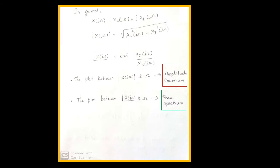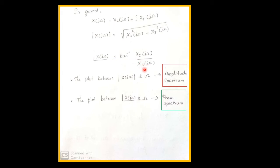In general, we can write X(jω) = X_R(jω) + j·X_I(jω), where X_R is the real part and X_I is the imaginary part. The magnitude is: |X(jω)| = √(X_R²(jω) + X_I²(jω)). The phase of X(jω) is: ∠X(jω) = tan⁻¹(X_I(jω) / X_R(jω)).